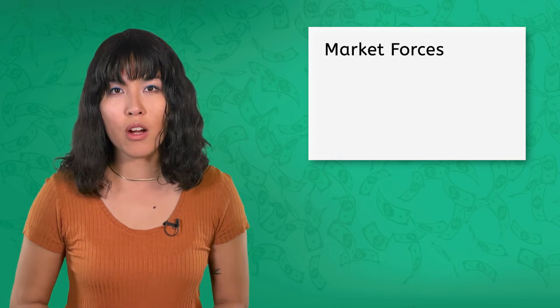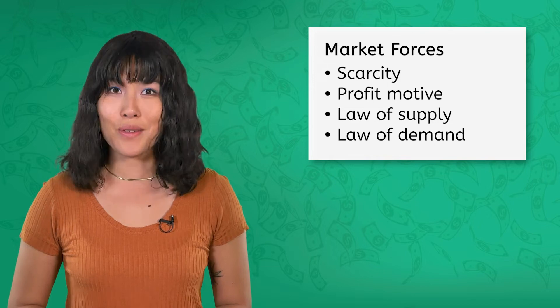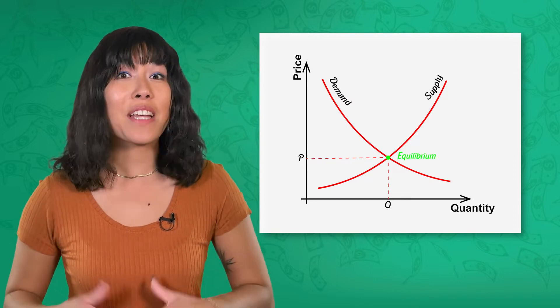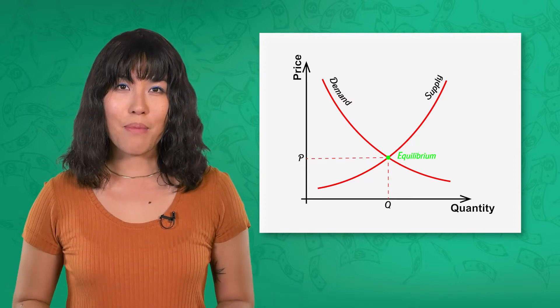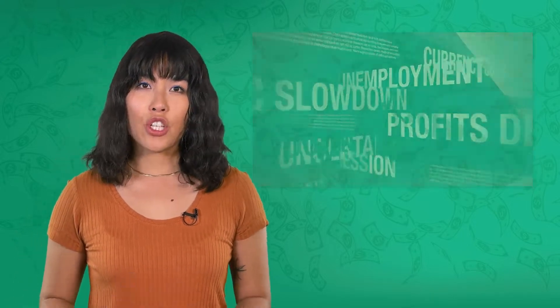We've talked a lot about internal market forces like scarcity, the profit motive, and the laws of supply and demand. And those are powerful forces. Much of the time, they can work to benefit producers and consumers, establishing equilibrium prices and encouraging innovation and efficiency. But sometimes things get too far out of balance — inflation hits, unemployment spirals out of control, or wages stagnate. So if the market can't fix itself, what or who can step in to take action?